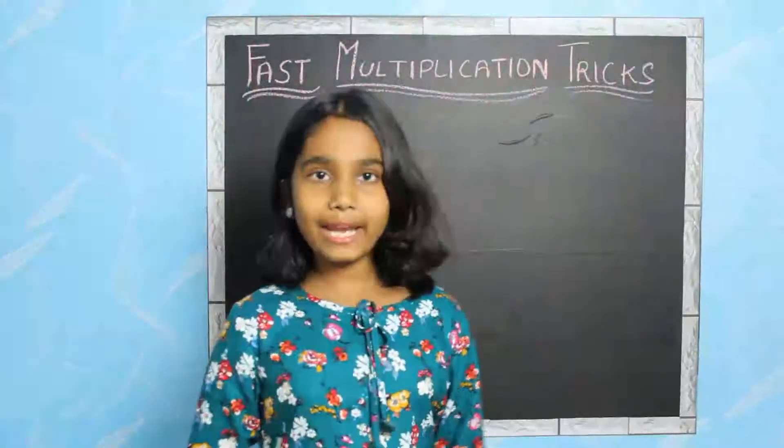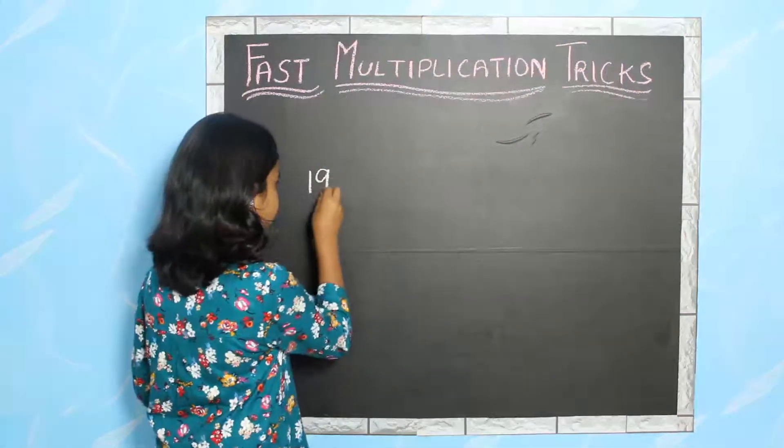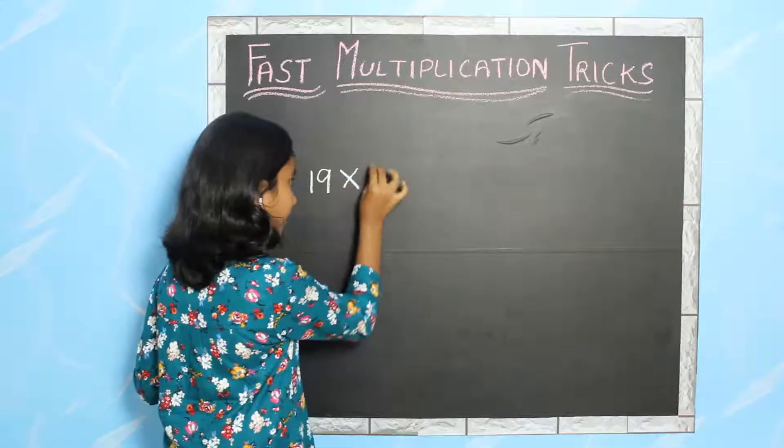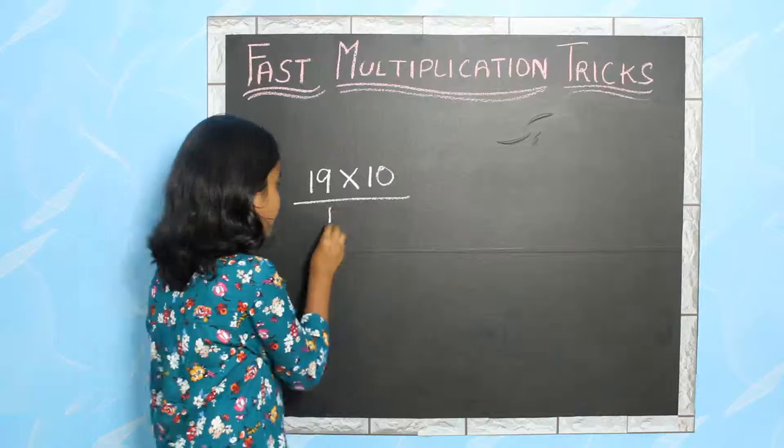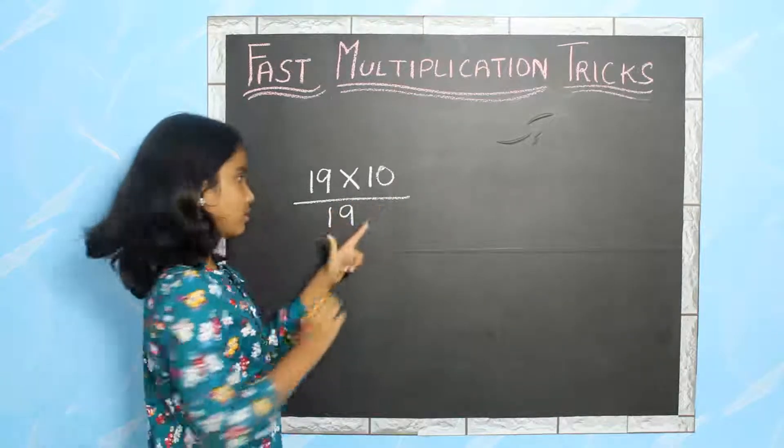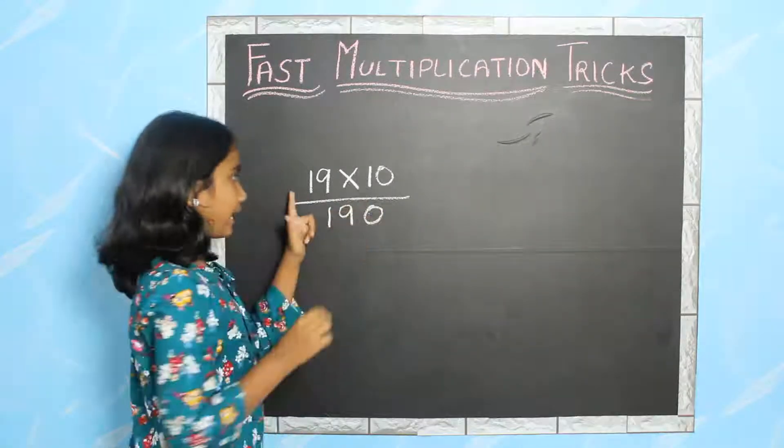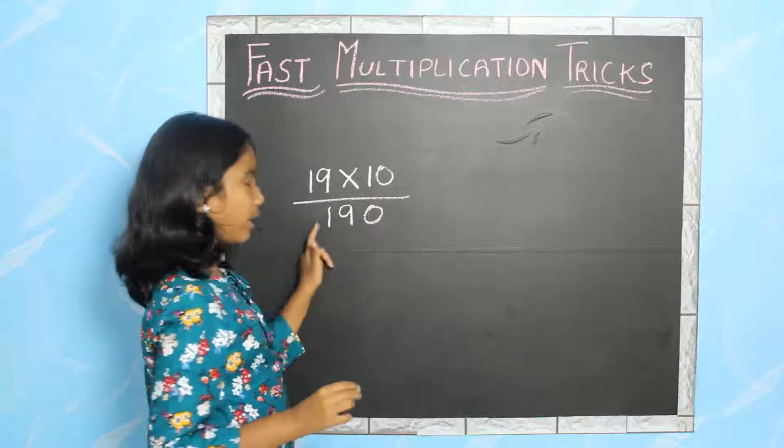So now I am taking an example. 19 into 10. So now I am going to bring down 19, and I am going to add a 0. So 19 into 10 is equal to 190.